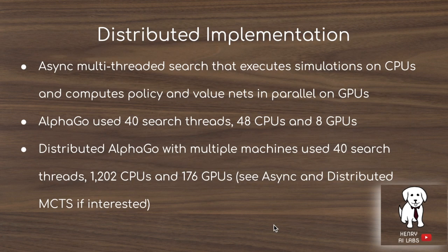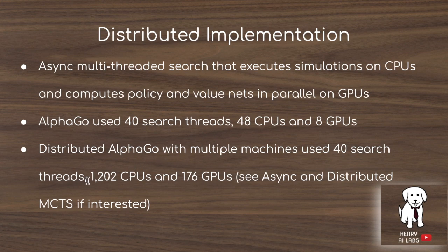Another interesting characteristic of the AlphaGo paper is its distributed implementation: neural network inference is accelerated using 8 GPUs and 48 CPUs with 40 search threads. The distributed AlphaGo algorithm scales further to 40 search threads with 1,202 CPUs and 176 GPUs. The 19×19×48 input is processed through convolutional neural networks massively accelerated by parallel GPU execution.